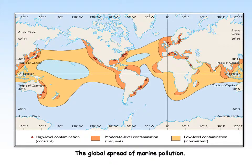This map shows where pollution is, which is usually where it's released into the ocean — where people live. Sources of pollution tend to have high levels of pollution. The further you go away from human activity — Southern Ocean, Antarctica, places around there — the more pristine they are, compared to places around Western Europe, the US, and Eastern Asia.